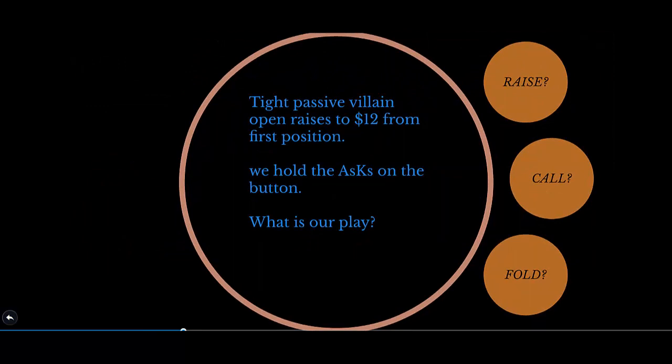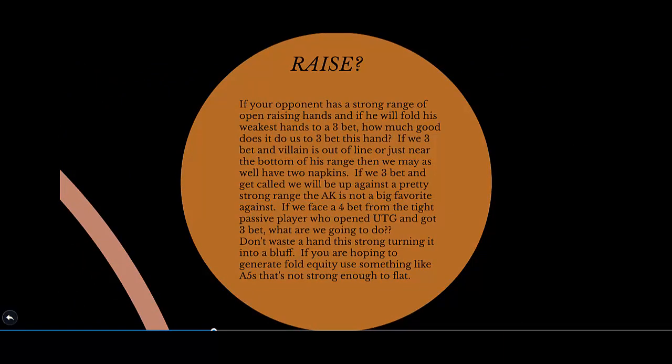Tight passive villain open-raises to $12 from under the gun. We hold the ace of spades, king of spades on the button. Action folds to us — what's our plan? Should we raise our ace-king suited? If our opponent has a strong range and will fold his weakest hands to a 3-bet, how much good does it do us to 3-bet? If we 3-bet and villain is near the bottom of his range, we may as well have two napkins. If we 3-bet and get called, we'll be up against a pretty strong range. If we face a 4-bet from this tight passive player who opened UTG, don't waste a strong hand turning it into a bluff. Use something like ace-5 suited to generate fold equity — not ace-king.